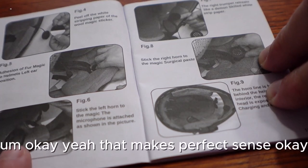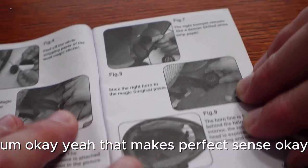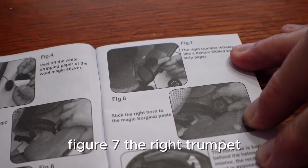Okay, figure seven: the right trumpet. So on one side it's a horn, on the right side it's a trumpet.